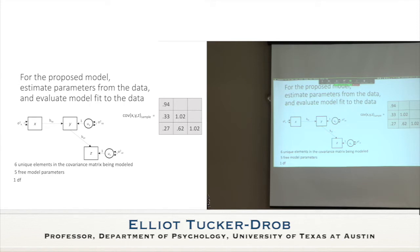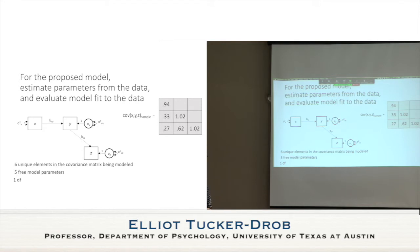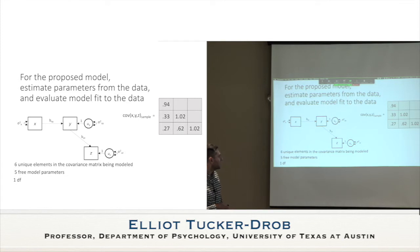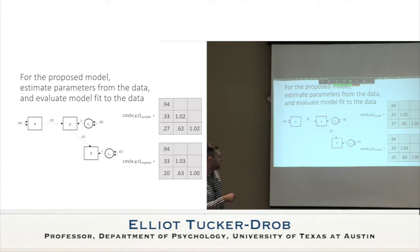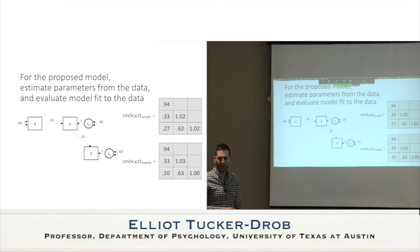We estimate the parameters that minimize the difference between the model-implied matrix and the observed matrix — essentially least-squares regression estimates because it's just a system of regression equations. When we do this we get 0.35 and 0.61 for the path coefficients; multiplying those paths produces 0.20 for the implied X–Z covariance. We can compare the model-implied matrix to our sample matrix and use things like a chi-squared statistic to test whether the model deviates more than expected by chance.